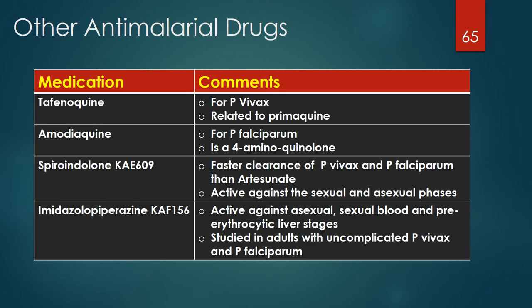Other potentially promising antimalarials include tafenoquine, related to primaquine, which has been used successfully to treat Plasmodium vivax; amodiaquine, a 4-aminoquinolone used to treat Plasmodium falciparum; spiroindolone, which cleared Plasmodium vivax and falciparum faster than artesunate in a Thailand study; and imidazole piperazine, which is active against blood and liver stages and has been studied in adults with uncomplicated vivax and falciparum.